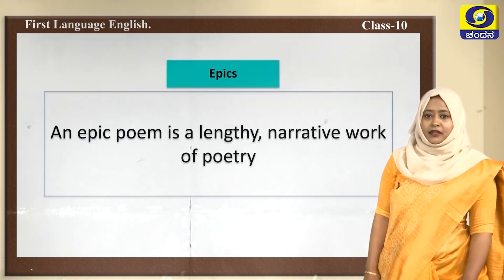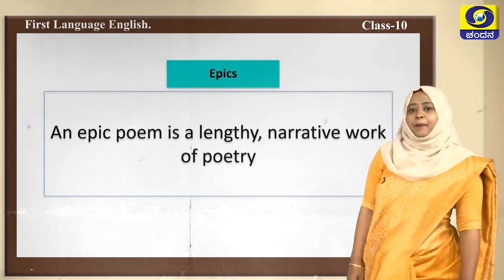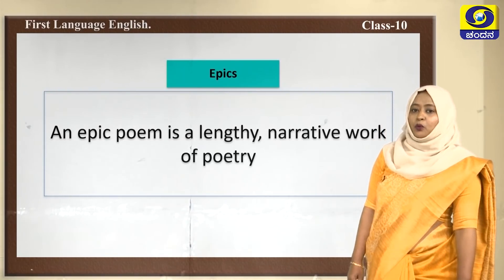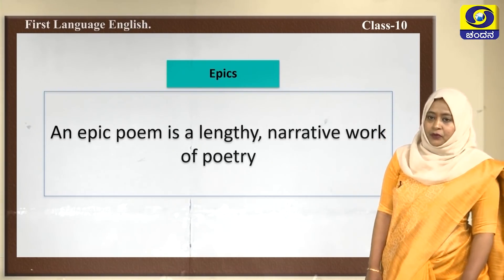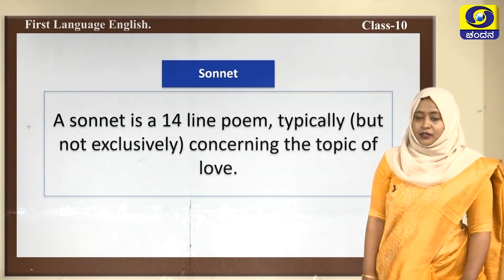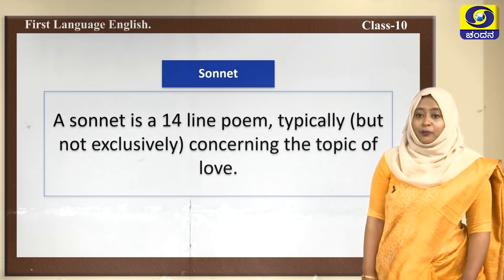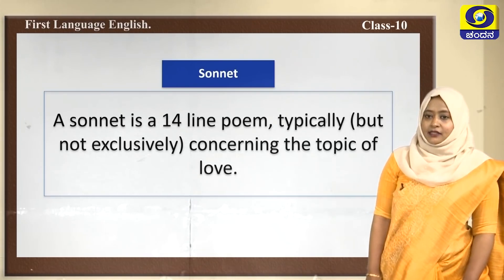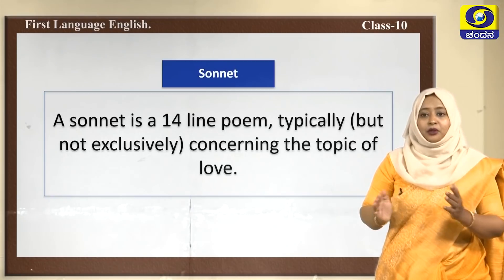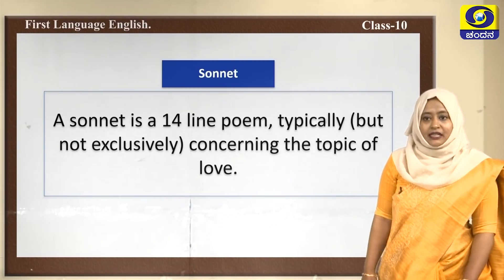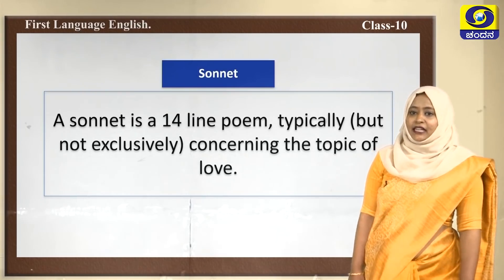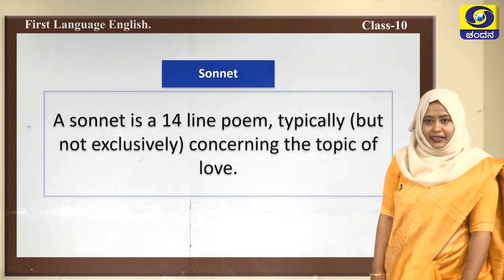The next one is epics. An epic poem is a lengthy narrative work of poetry. The next one is a sonnet — a poem with 14 lines where the entire scenario is completed within those 14 lines, typically but not exclusively concerning the topic of love.